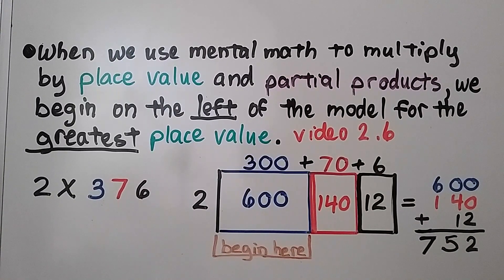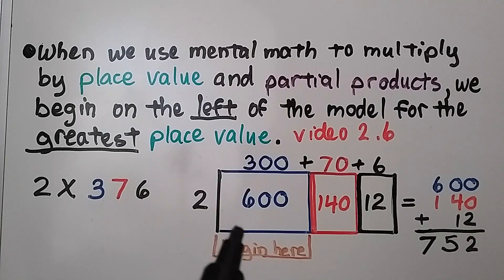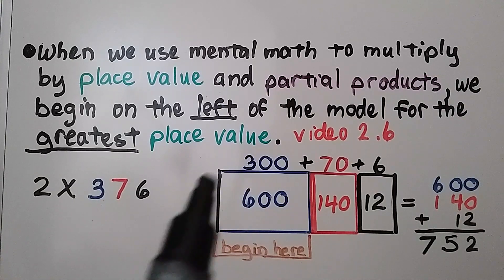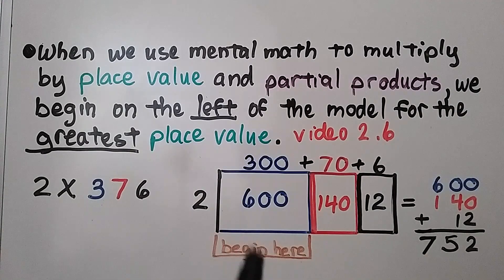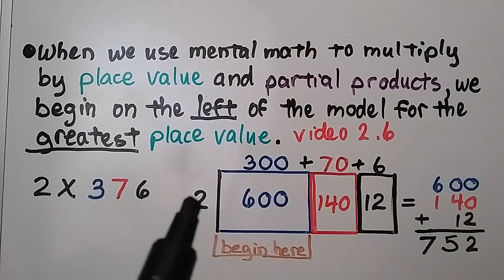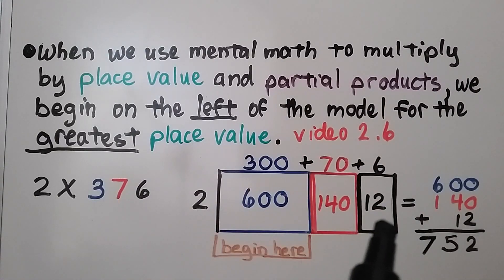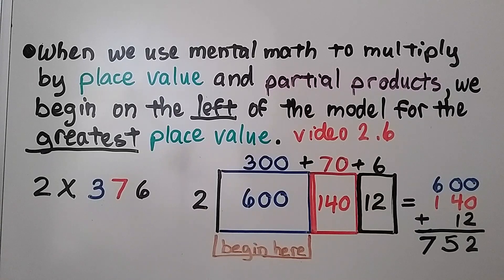From video 2.6, when we use mental math to multiply by place value and partial products, we begin on the left of the model at the greatest place value. For 2 times 376, we start with 2 times 300, which is 600. Then 2 times 70 is 140, and 2 times 6 is 12. We add these partial products and get 752. So we start with the greatest place value for mental math.